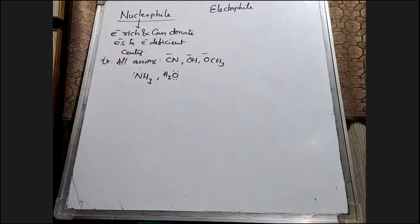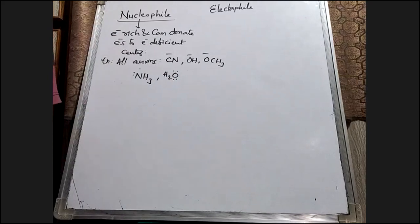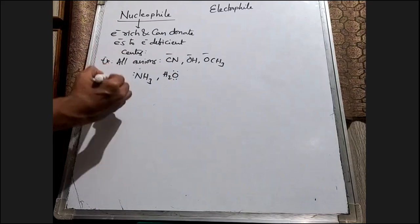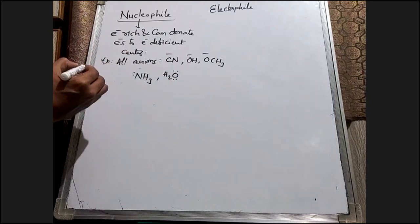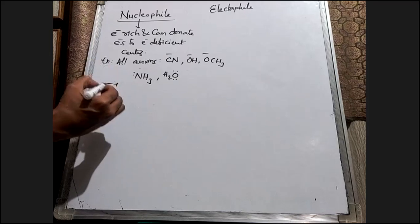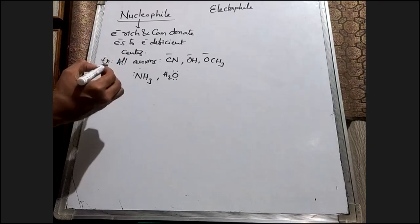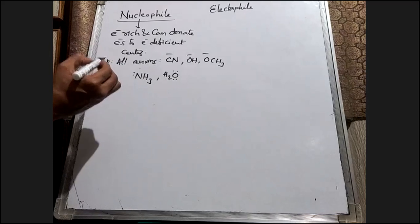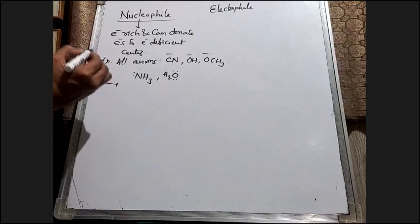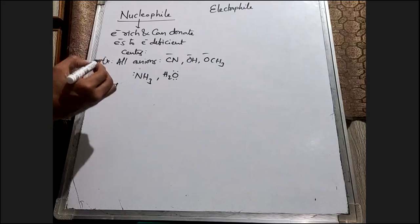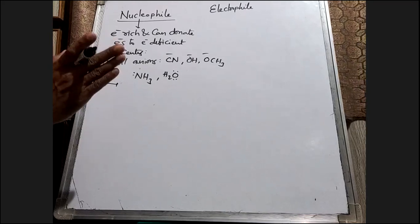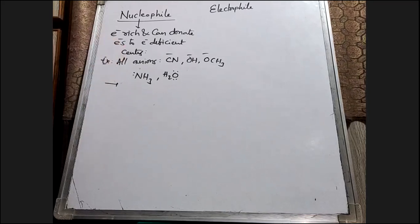During a polar organic reaction, a nucleophile attacks the electrophilic center of the substrate. The electrophilic center of the substrate is the specific atom or part of the molecule that is electron deficient.